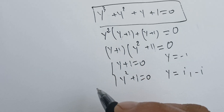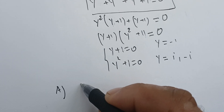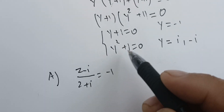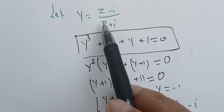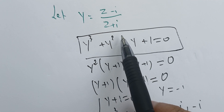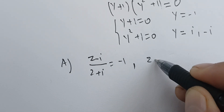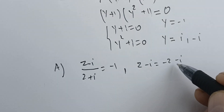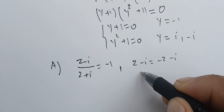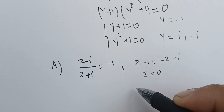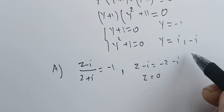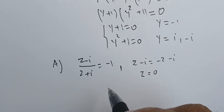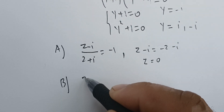We now solve three cases. Case one: (z minus i) over (z plus i) equals minus one. Multiplying both sides gives z minus i equals minus (z plus i), so z minus i equals minus z minus i. Adding z to both sides and simplifying gives 2z equals zero, so z equals zero. This is the first solution.